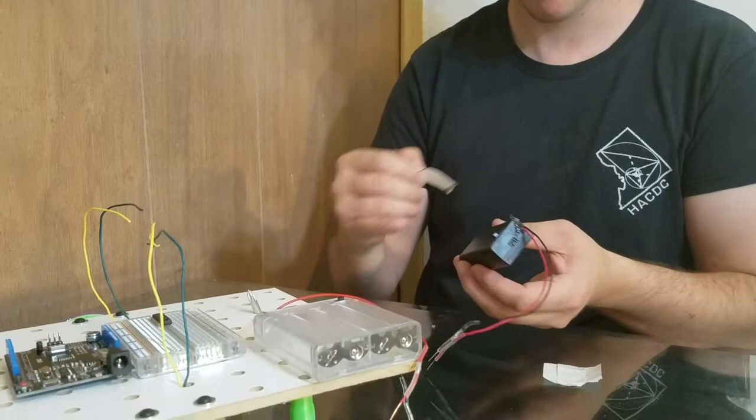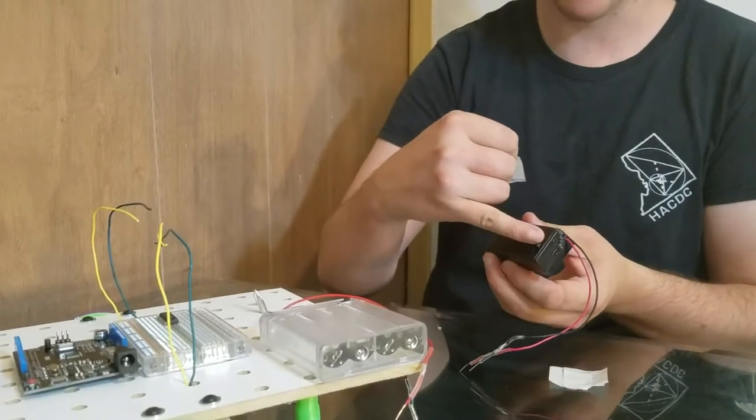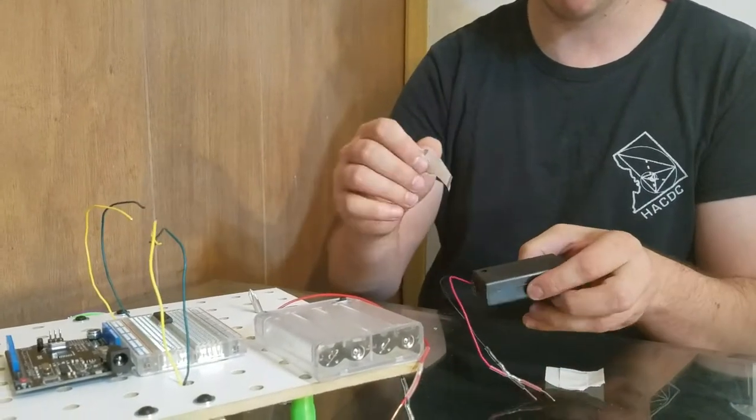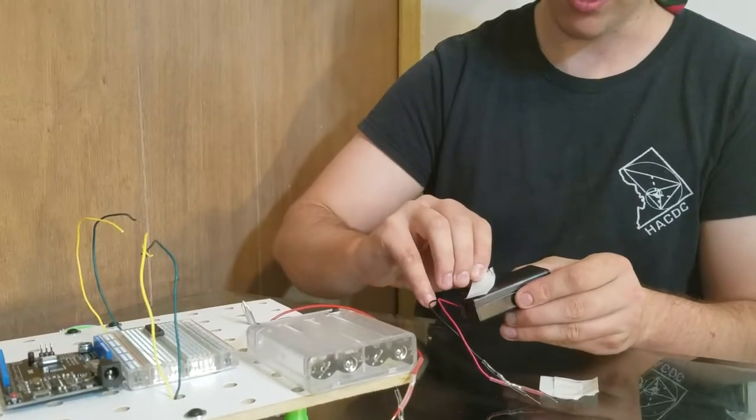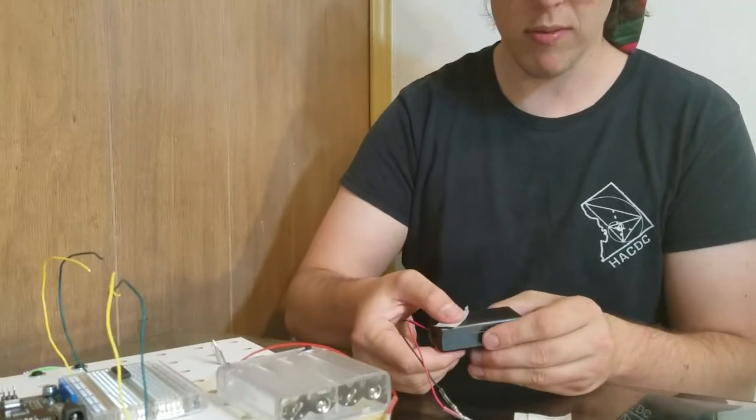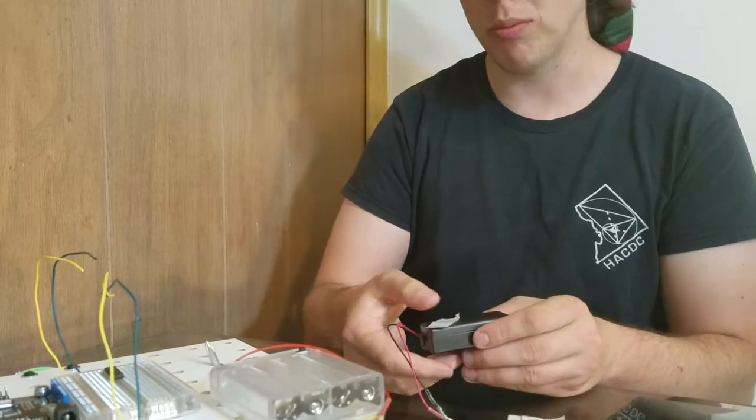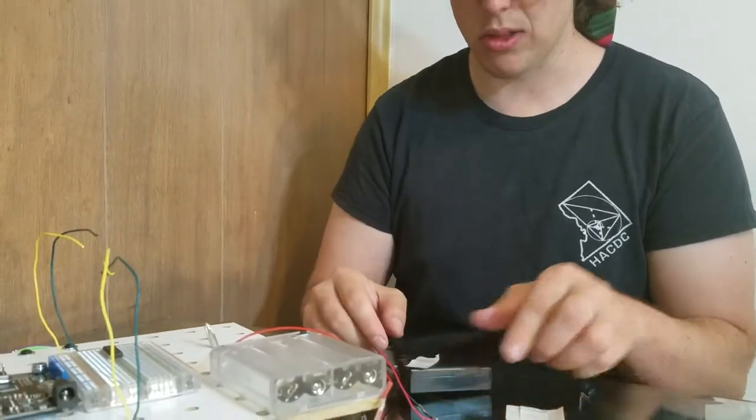Make sure that you put the glue dots on the side that doesn't have the on-off switch. Go to the back side that has a screw, but don't cover the screw. Just make sure that you're putting the glue dot on the same side as the screw.